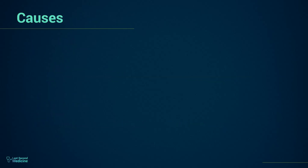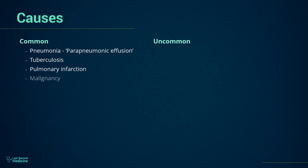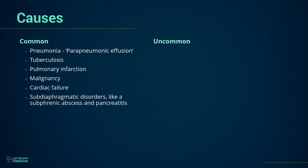Causes of pleural effusion. Pleural effusion causes can be classified according to the type of effusion into exudative and transudative causes. A more practical grouping is into common and uncommon causes. Common causes of effusion include pneumonia resulting in parapneumonic effusion, tuberculosis, pulmonary infarction, malignancy, cardiac failure, subdiaphragmatic disorders like a subphrenic abscess, and pancreatitis.